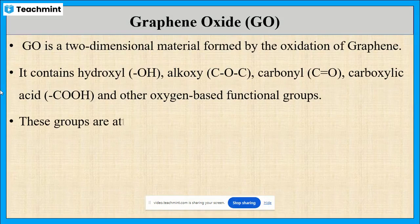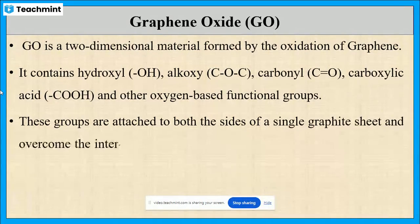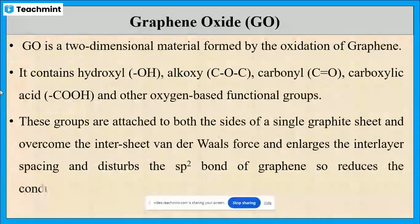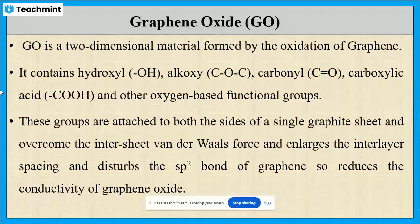When these functional groups are attached to both sides of a single graphite sheet, they defeat the inter-sheet van der Waals force, so that an increase in the inter-layer spacing takes place, which distorts the sp2 bond of graphene. Hence, this reduces the conductivity of graphene oxide.